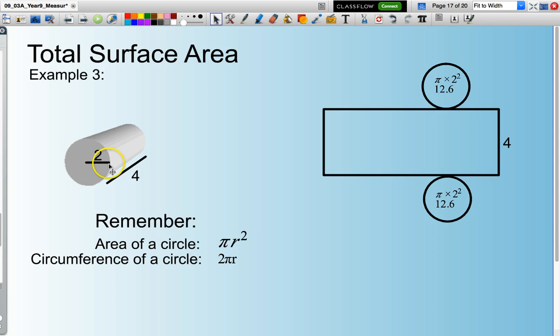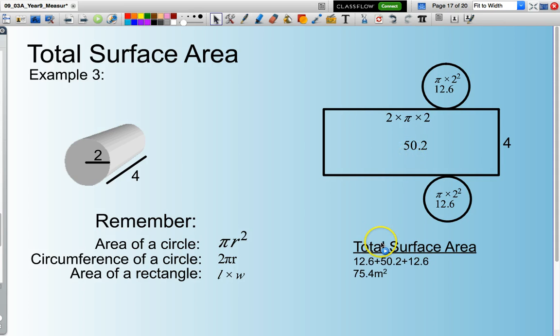So when I unravel that curved surface I end up with a rectangle so we've 2 multiplied by pi multiplied by 2 which is my radius and to calculate the area of a rectangle I need to multiply the length times the width so in other words I will multiply this 2 times pi times 2 multiply that by 4 that gives you the area of my rectangle.